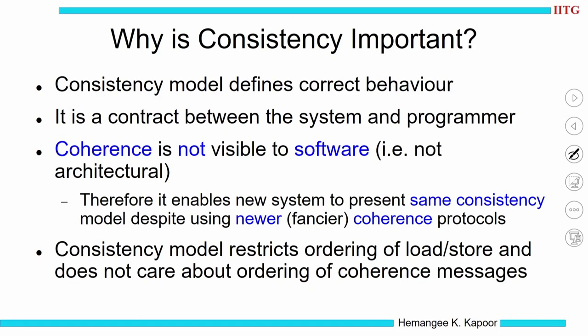The system says: I am going to give you such-and-such ordering model, and the programmer can rely on that model to reason about their programs. Coherence was not visible to the software and is not at the ISA level, but consistency is provided by the system as a contract — known to all layers of software development. The compiler has to know, the operating system has to know. Because coherence is not seen by the software, we can always have newer and fancier coherence protocols implemented using the same consistency model.